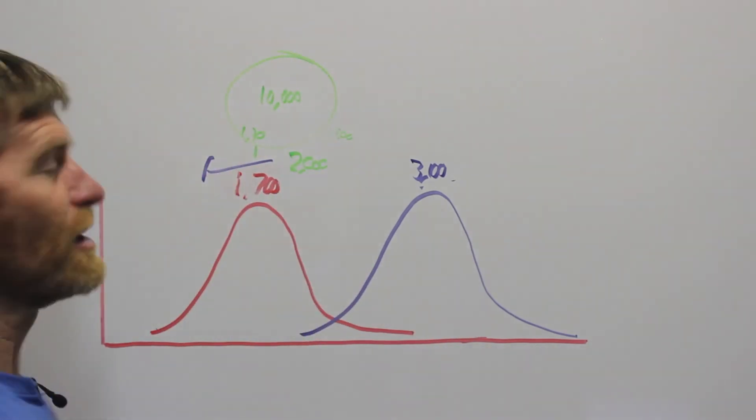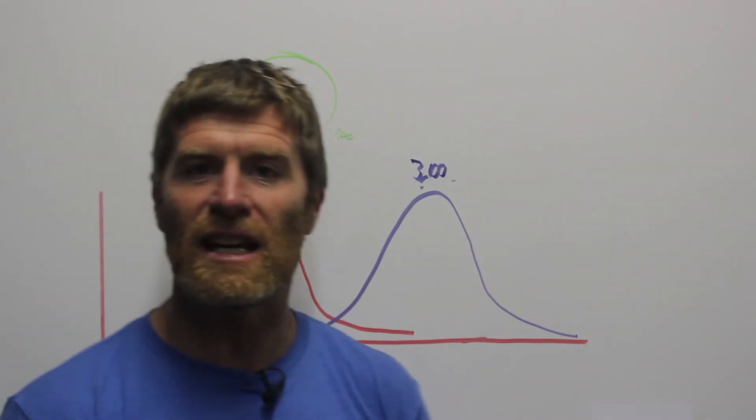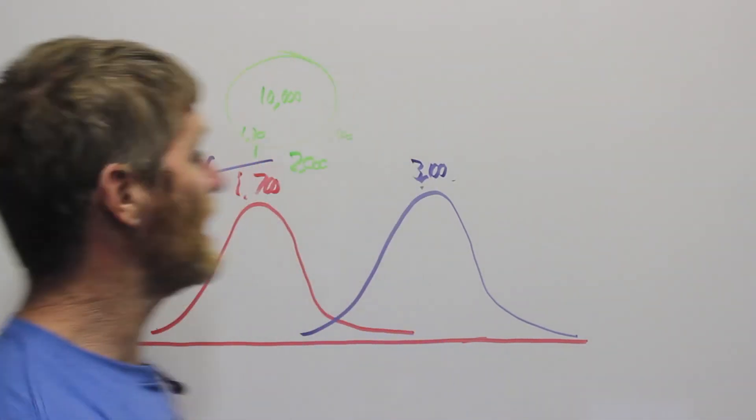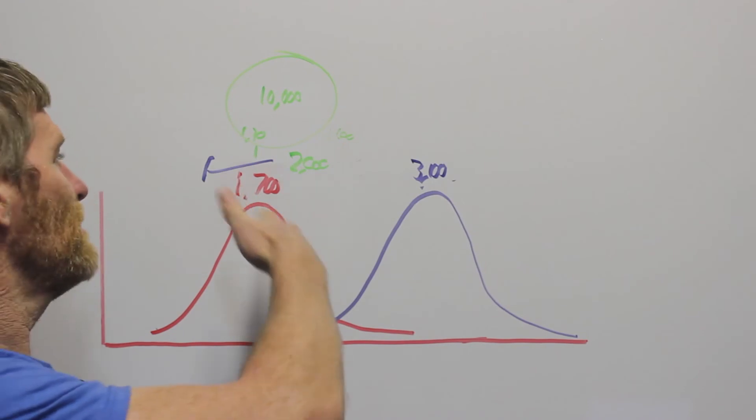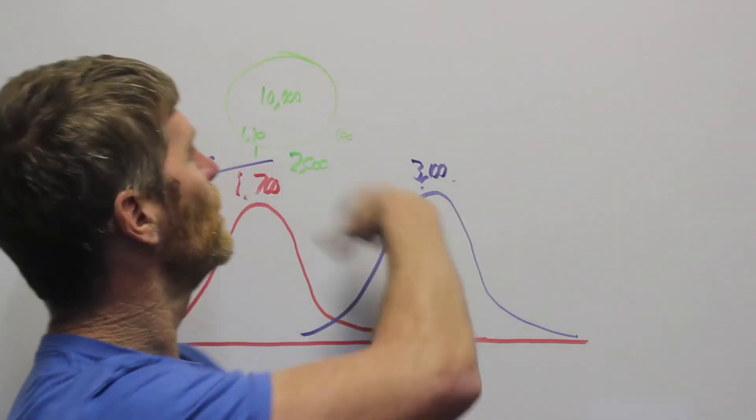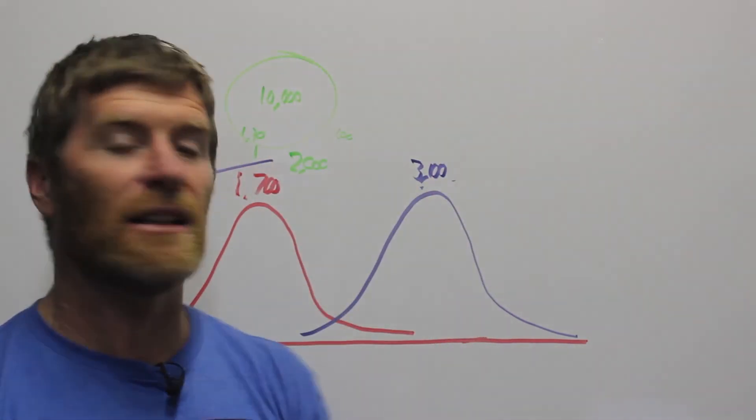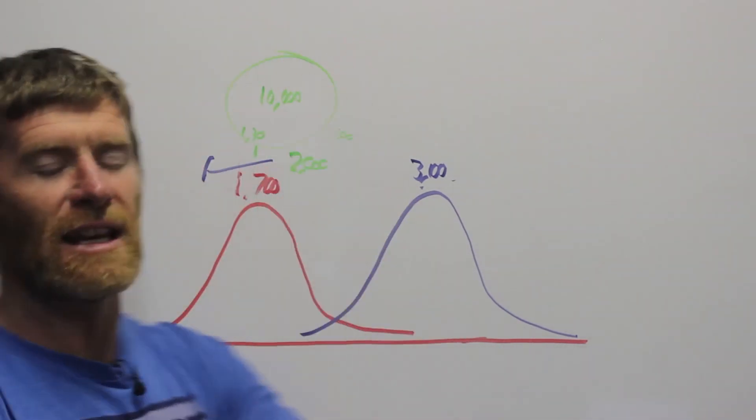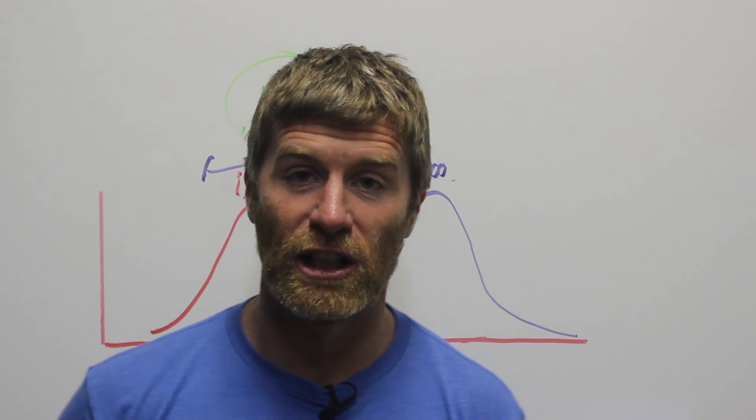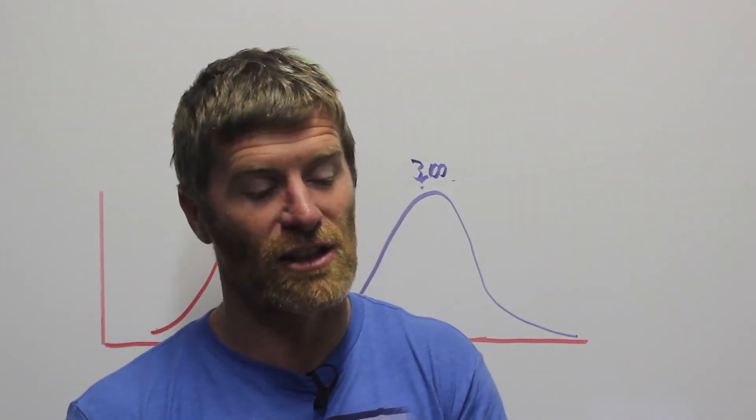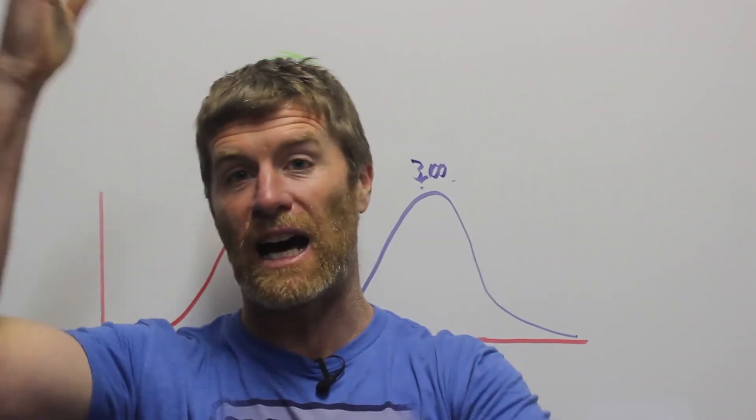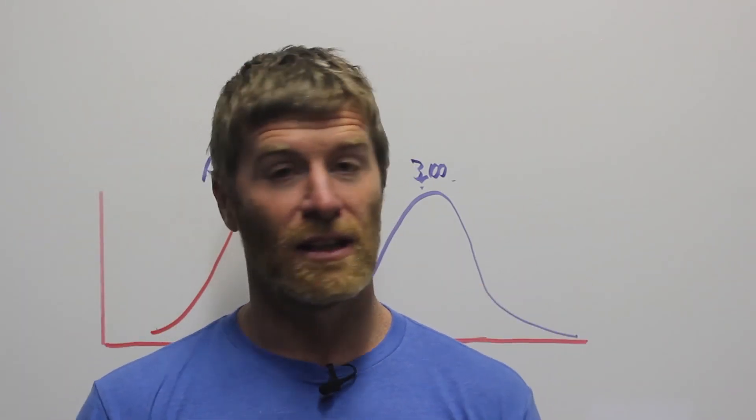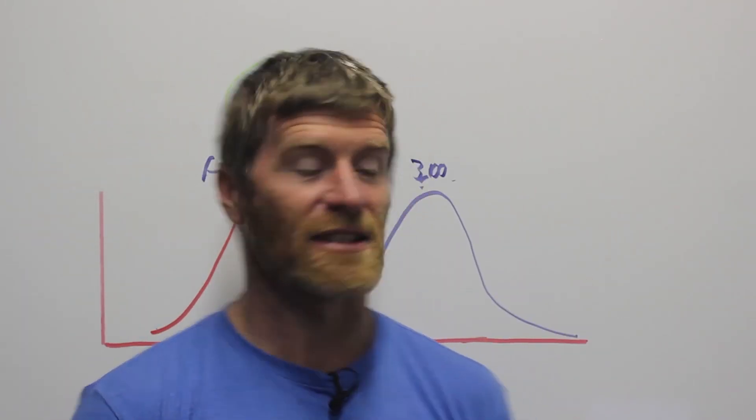So the Goldilocks zone for fat loss. Find where your daily calories need to be to produce sustainable fat loss. Multiply it by seven. Female example might be 1,400 times seven will bring us to 10,000. Male example might be 2,000 times seven brings us to 14,000. If you get into that Goldilocks zone, regardless of what you're doing with exercise, regardless of what you're doing with carbs or fats, regardless of what you're doing with meal timing, you're going to lose weight and you're going to have great success. So that should be your focus.